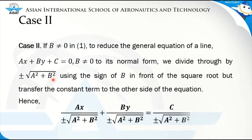So the normal form is written as: ax over (±√(a²+b²)) plus by over (±√(a²+b²)) is equal to negative c over (±√(a²+b²)).